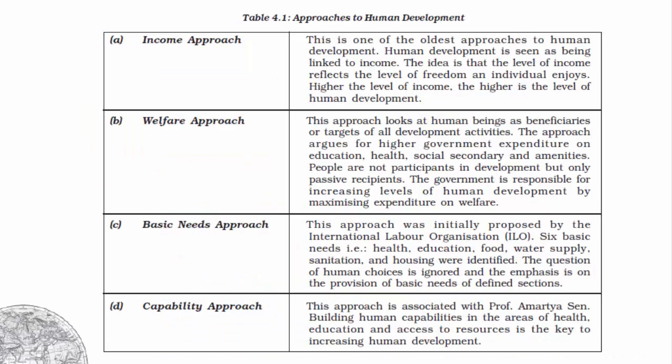This table shows the various approaches to human development. The first one is the income approach — this idea says that people's income level reflects their level of freedom. Simply put, if you have more money, you can do more things. So higher the level of income, the higher the level of human development. Economists felt this approach could be used to measure human development.